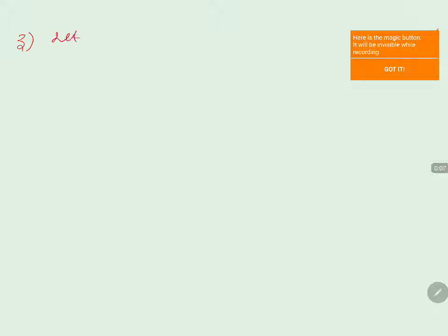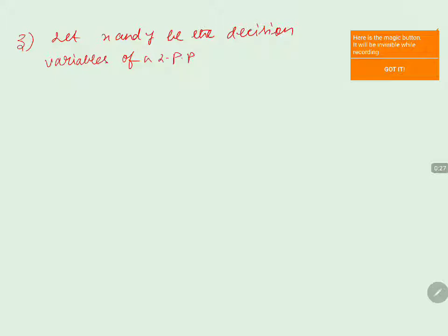The question is: let x and y be the decision variables of a Linear Programming Problem (LPP). We are asked to find a possible constraint of the problem.